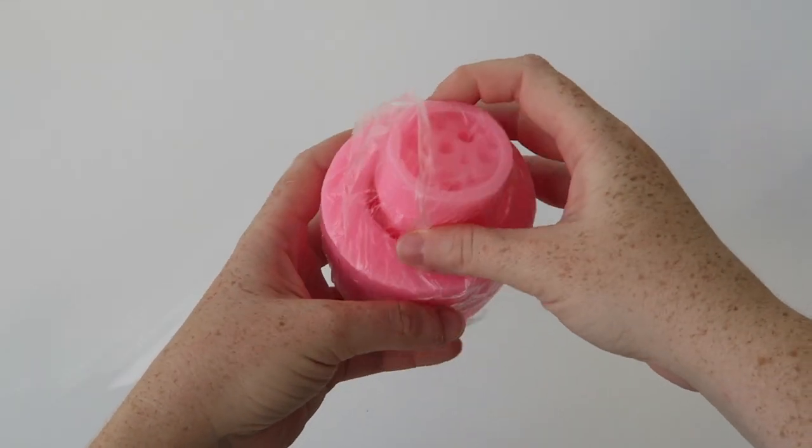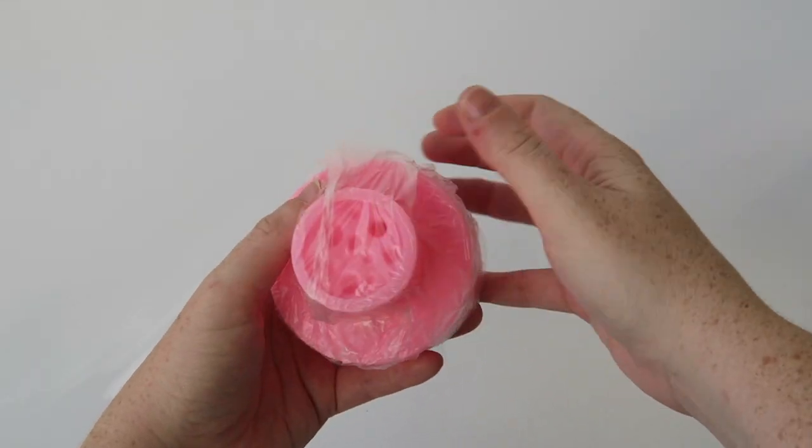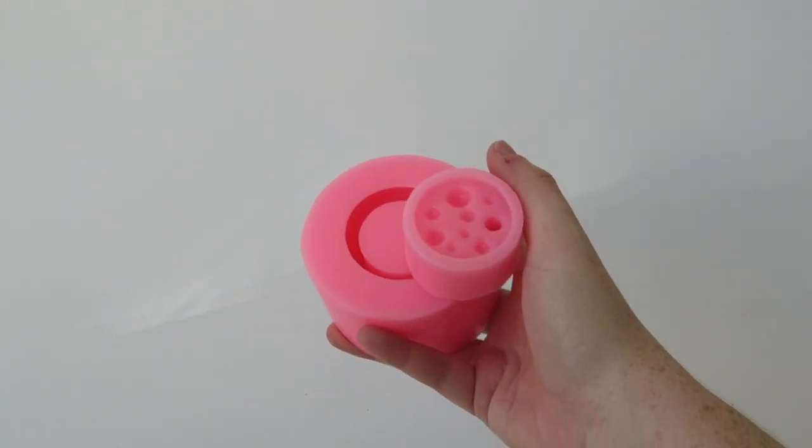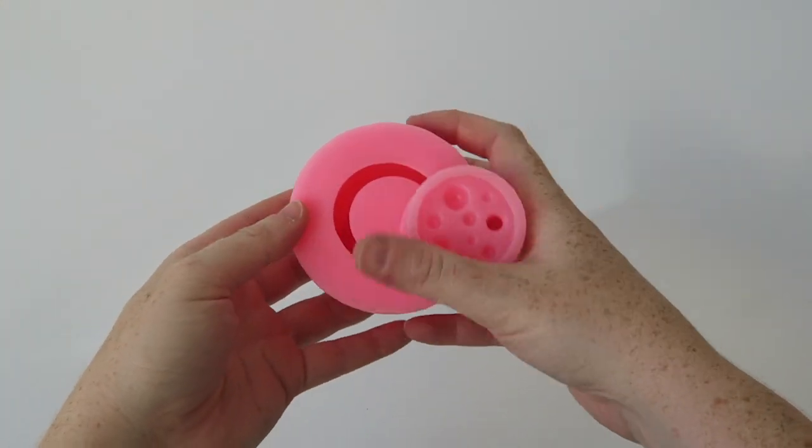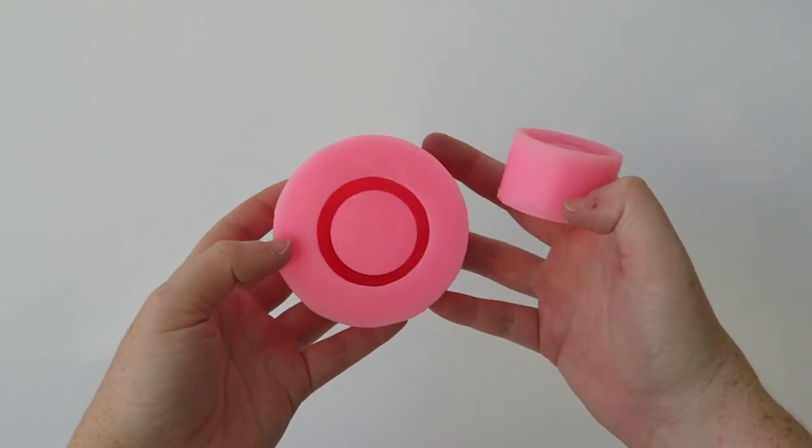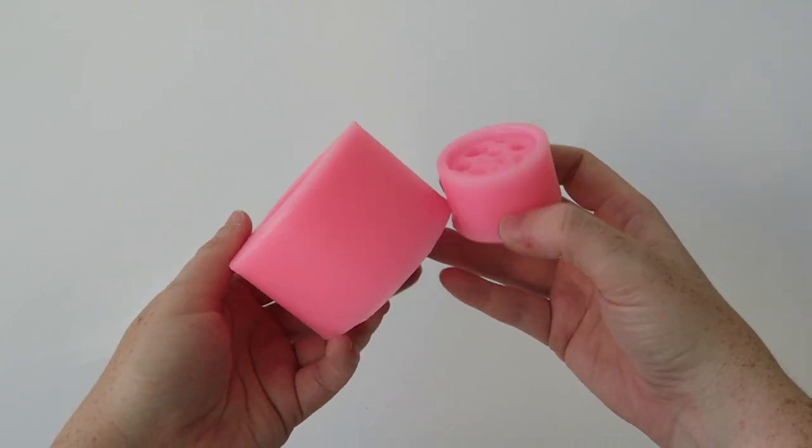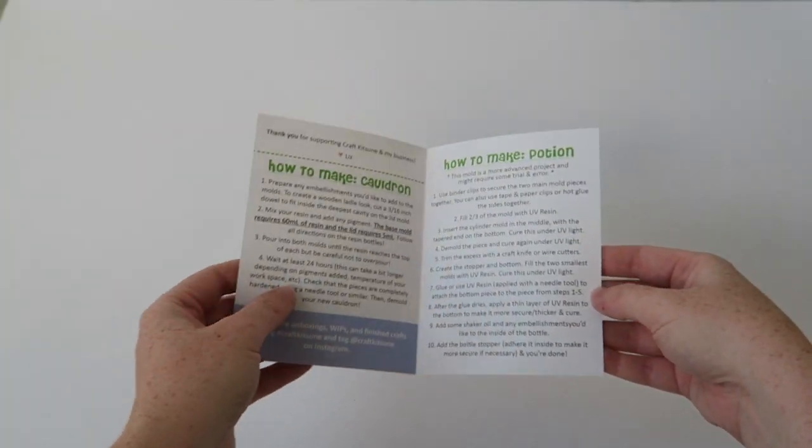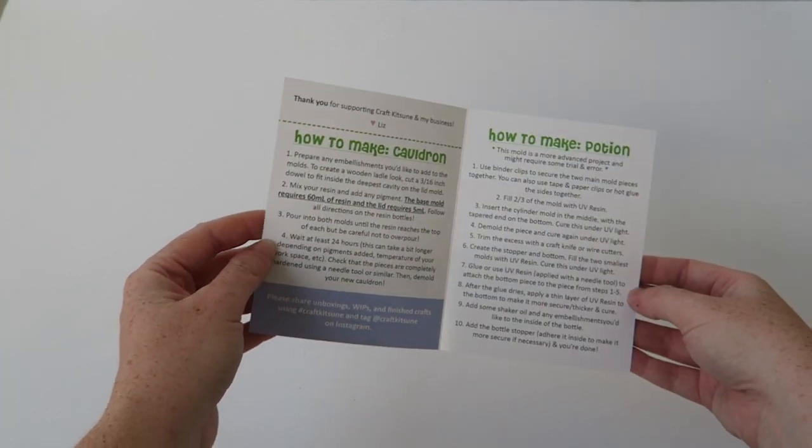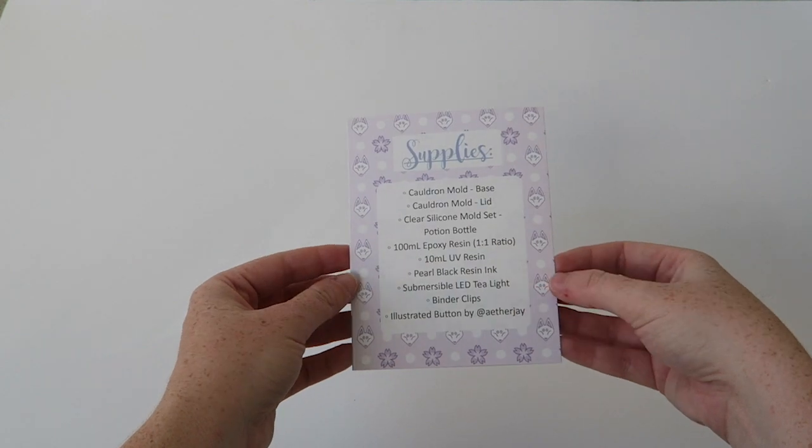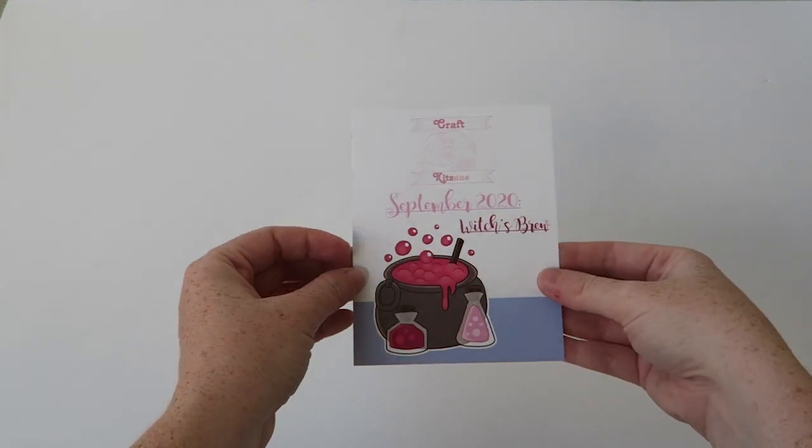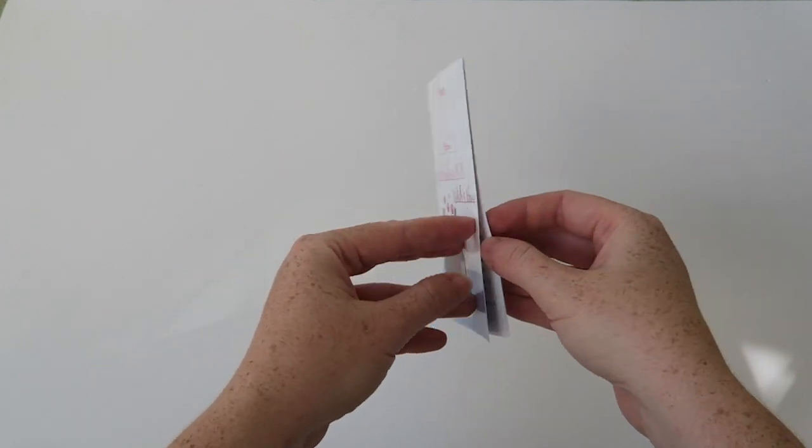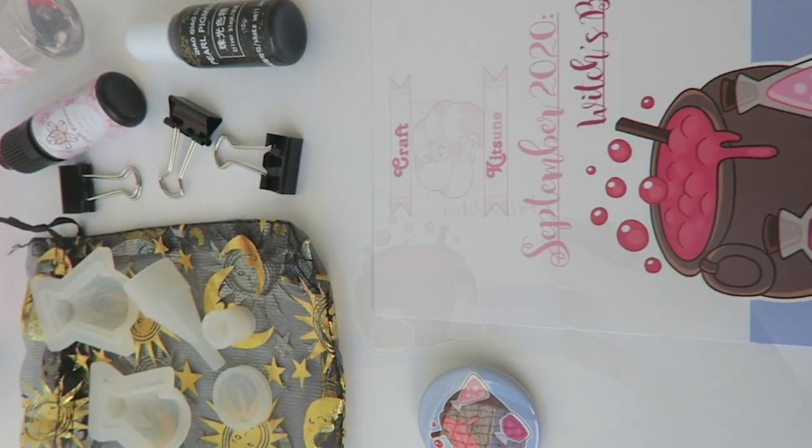Here's what the mold set looks like. I had a manufacturer make these molds exclusively for the September Craft Kitsune box. I want to give a huge thank you to all my subscribers and those who showed interest in this exclusive design. This mold set received a lot of love so I'll definitely be making more exclusive mold designs very soon. To stay up to date with any exclusive designs and other updates you can follow on Instagram, Facebook, or join the email list.